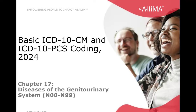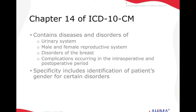These codes all begin with the letter N. These codes are for diseases and disorders not only of the urinary system, but also the male and female reproductive system, disorders of the breast, and any complications occurring in the intraoperative and postoperative period.